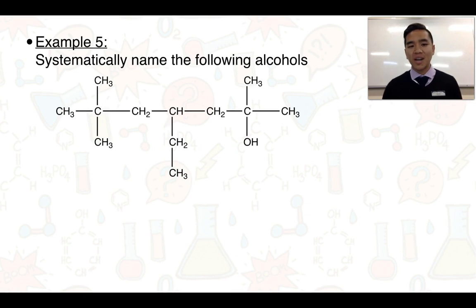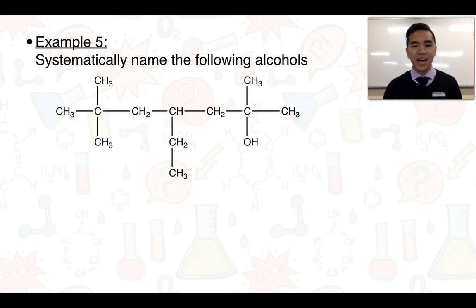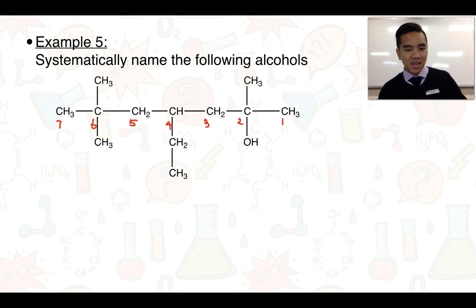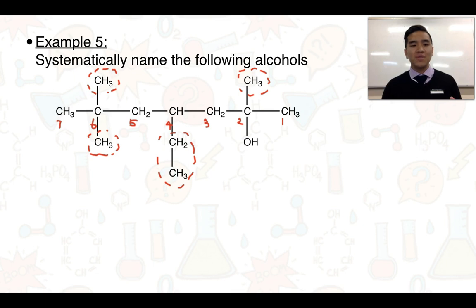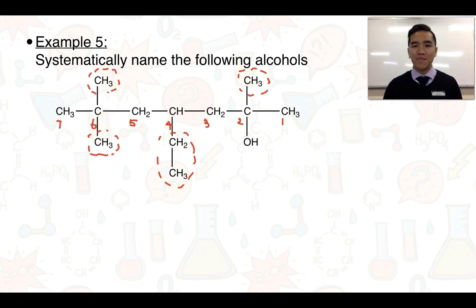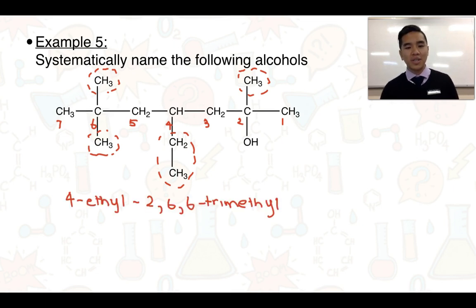One more example: determine the longest carbon chain containing the –OH group — one, two, three, four, five, six, seven — so it's going to be a heptanol. We number from right to left to give the –OH the lowest number. We indicate the methyl groups and ethyl groups — alphabetical order applies — and with seven carbons it's a heptan-, giving us heptan-2-ol or 2-heptanol.